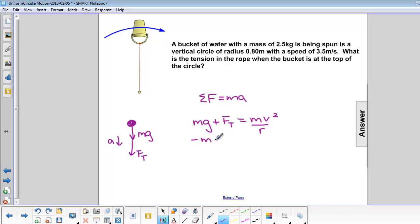We should subtract mg from both sides to get tension by itself. So we have F_T equals mv squared over r minus mg. We can also factor out the m, so we have m times v squared over r minus g.